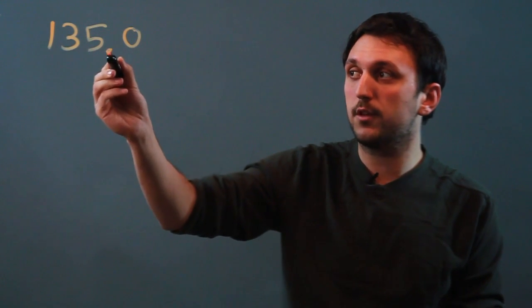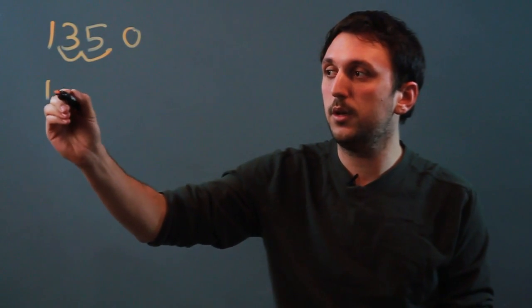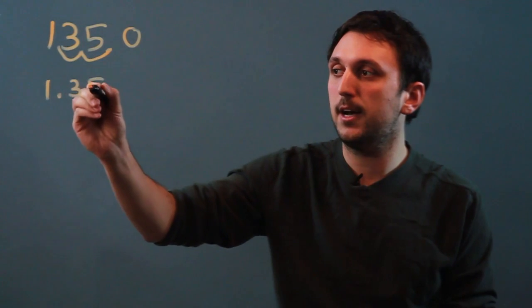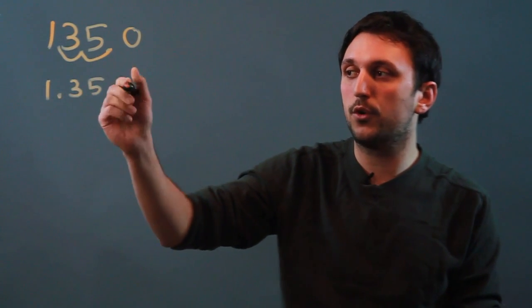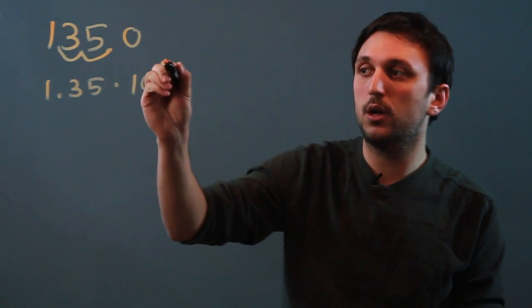So we want this decimal to move over two places: 1, 2. So we'd say 1.35. Now because we've moved it over two places, we're going to say times 10 to the second.